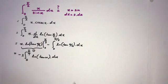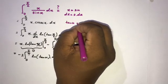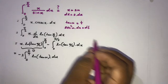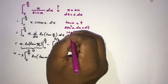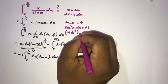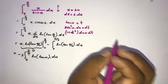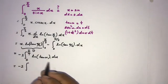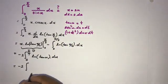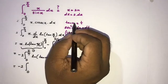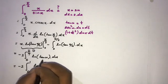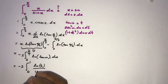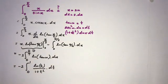To evaluate this further I take another substitution: let tan(u) = t. Differentiating gives sec²(u) du = dt. Since sec²(u) = 1 + tan²(u) = 1 + t², we have du = dt/(1 + t²). The limits change: when u → 0, t → 0; when u → π/4, t → 1. The integral becomes minus 2 times the integral from 0 to 1 of natural log(t) over (1 + t²) dt.